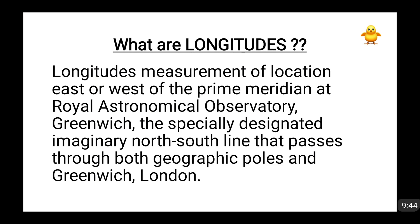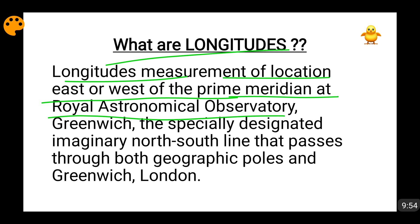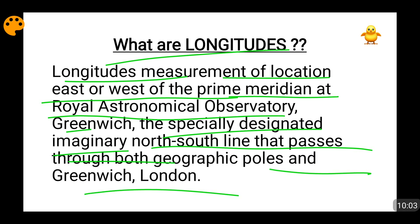Now we are going to talk about longitudes. Longitude is the measurement of location east or west of the Prime Meridian at the Royal Astronomical Observatory, Greenwich — the specially designated imaginary north-south line that passes through both geographical poles and Greenwich, London. In 1884, the International Meridian Conference took place, and it was important that a common standard be adopted to calculate time all over the world for a uniform set standard. At that time, England was the dominant country, so the conference took place in Greenwich, London, and the Royal Astronomical Observatory was set as the standard point. The line joining the north pole and south pole passing through the Greenwich Astronomical Observatory became the Prime Meridian.